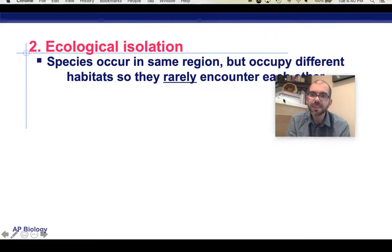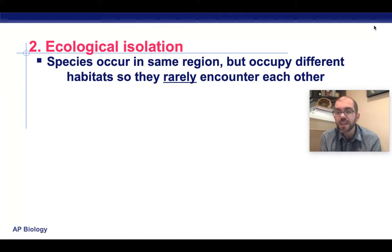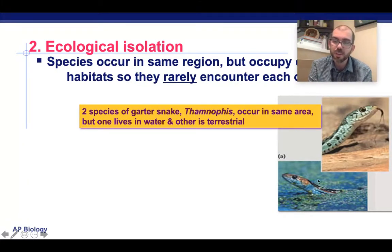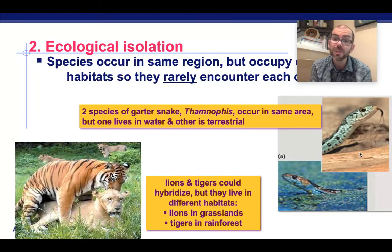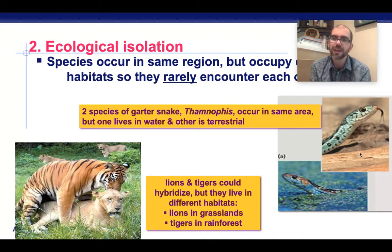Ecological isolation is slightly different. This is when species live in the same area but, because they live in different niches, they rarely encounter each other. For example, these two garter snakes — one always lives in fresh water, the other on land. They could reproduce, but the water one never goes on land and the land one never goes in water. They are ecologically isolated. Same thing with tigers and lions: they can reproduce, you can have tigons and ligers, but lions exist in grasslands and tigers exist in the rainforest. They have completely different niches, so they don't intermingle.